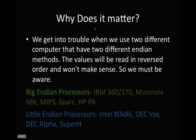And then why does it matter? Well, we get into trouble when we use two different computers that have two different endian methods. The values will be read in reversed order and won't make any sense. So we just have to be aware of that. And these are some different processors that use Big Endian and processors that use Little Endian.